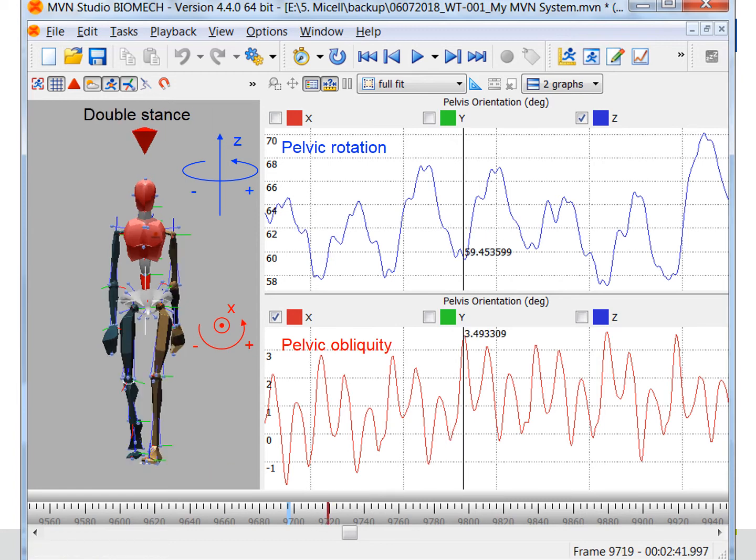Now it is the double stance period, but it's right before the swing phase of the right leg. So we can see the opposite value to the first graph. The left hip is ahead and higher than the right hip.